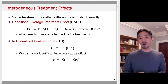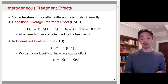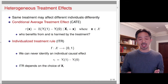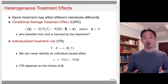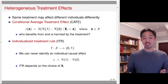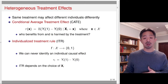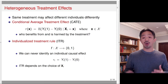Note that we can never identify an individual causal effect, tau i, which is the difference between the two potential outcomes. Since we only observe one of the two potential outcomes for any given individual, there's no way of identifying this individual causal effect. What that means is that the ITR depends on the choice of x. If you have a different set of covariates x, then the ITR may give you different recommendations, and you never know whether one ITR recommendation is better than another for any particular individual.